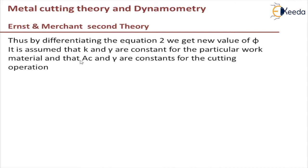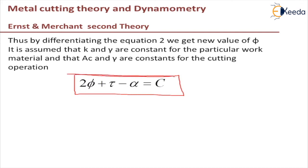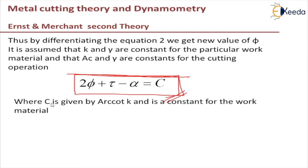Assuming k and rake angle α are constant for a particular work material, and chip area and rake angle are constants for the cutting operation, differentiating yields the new shear angle equation: 2φ + τ − α = C, where C is a constant for the work material. This is the new equation from the modified theory of orthogonal cutting, also called the Ernst-Merchant second theory. So we will end this video here.